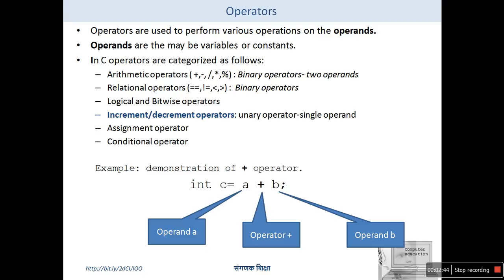We have the assignment operator, which is used to assign an r-value to some l-value. The left-hand side of the assignment operator generally contains the address where the value will be modified, and the right-hand side contains the values to be assigned. Then we have the conditional operator, also called the ternary operator — only one conditional operator is available in C.